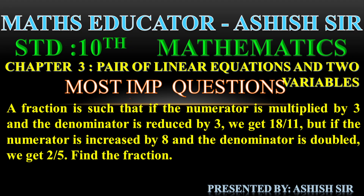Hi dear student, welcome to Maths Educator. This is Standard 10th Math, Chapter 3: Pair of Linear Equations in Two Variables. Here is a most important question: A fraction is such that if the numerator is multiplied by 3 and the denominator is reduced by 3, we get 18 upon 11. But if the numerator is increased by 8 and the denominator is doubled, then we get 2 upon 5. Find the fraction.